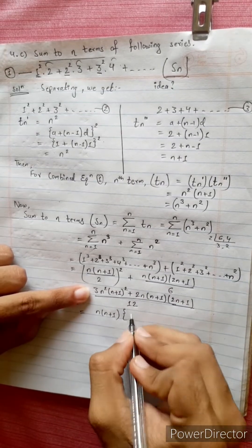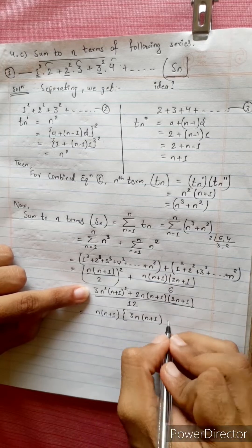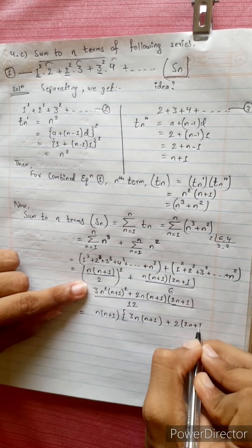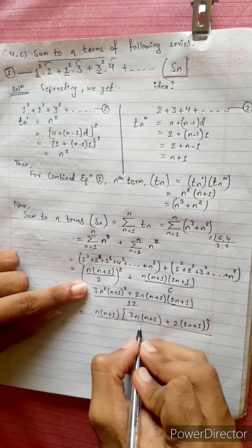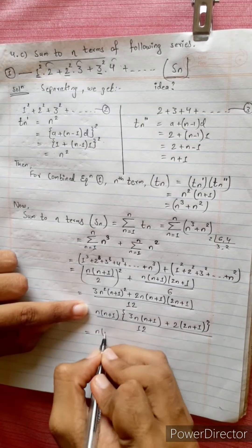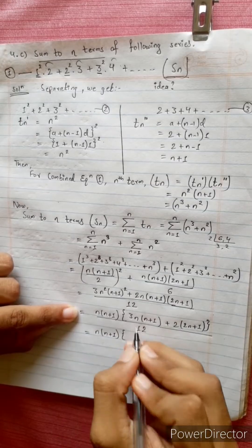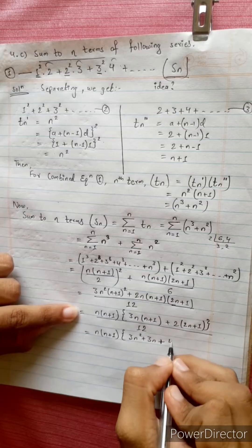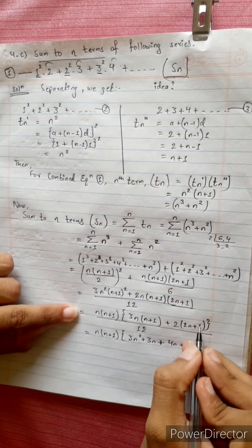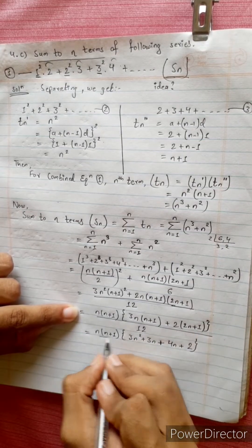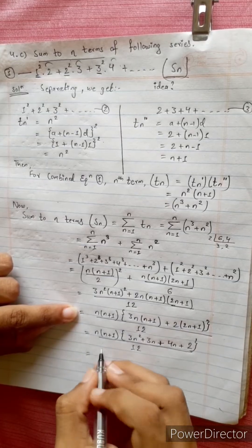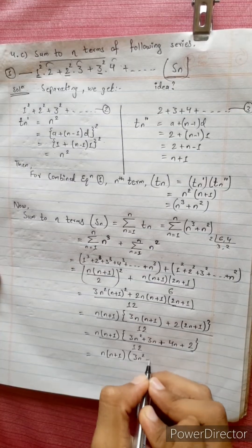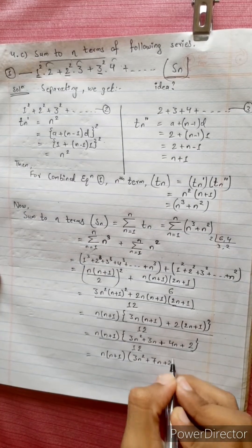We have n plus 1 squared, divided by 2, and further simplification leads to division by 12, giving the answer as n(n+1) times 3n squared divided by 12.